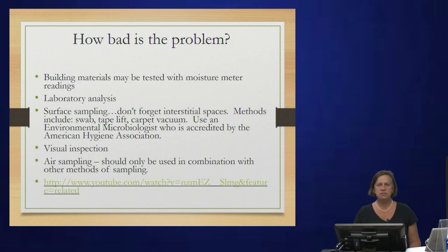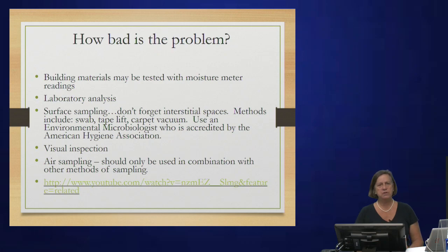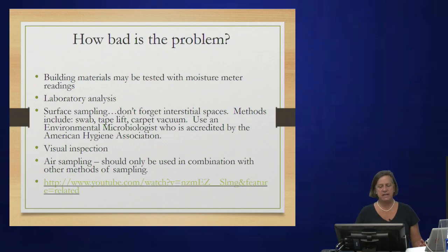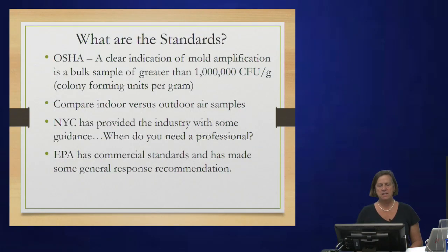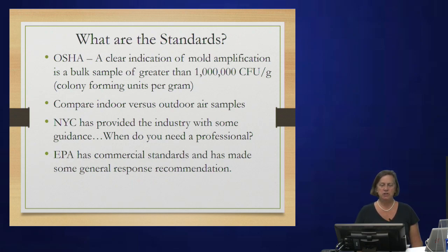Don't forget interstitial spaces. Having been through a Category 5 hurricane, we've had to tear out all of the walls and floors in our house. Once things are torn out, let everything dry thoroughly and be proactive — treat for mold before it appears. Any porous materials that have mold, you need to tear out. There are some standards, but no state standards in Virginia. OSHA has some general standards. New York City does. The EPA has some commercial standards.